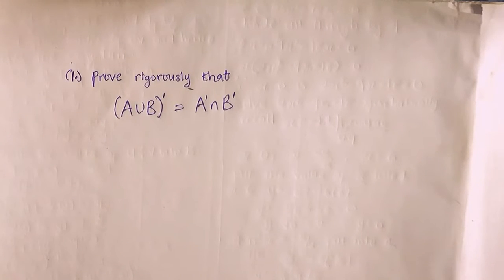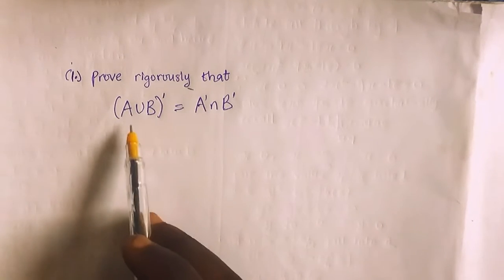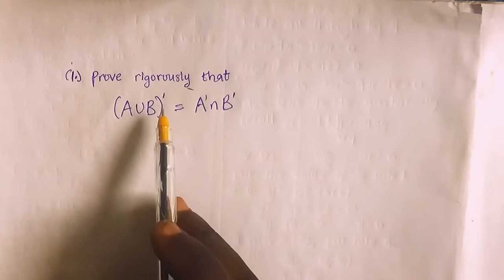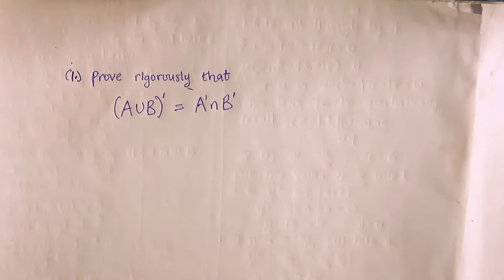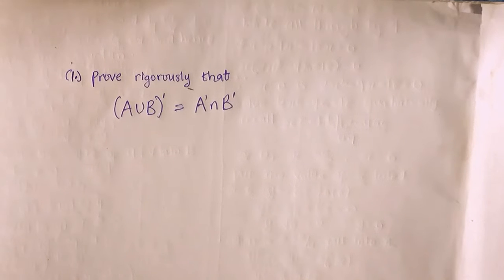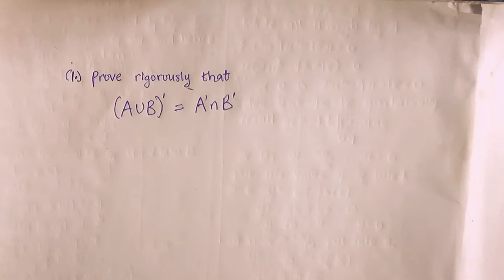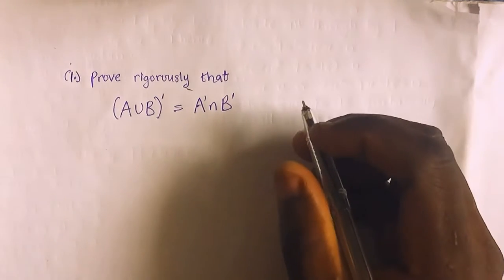Hi friends, in this video I'm going to prove that (A union B) complement equals A complement intersection B complement. I'll be proving this using De Morgan's Law, because you can actually use De Morgan's Law to prove any set properties. But before I proceed, I want you to understand two things.